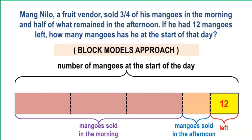And as stated in the problem, there were twelve mangoes left. It then implies that the number of mangoes sold in the afternoon is also twelve, because the remaining one-fourth was divided into two equal parts — half were sold in the afternoon and half were left.